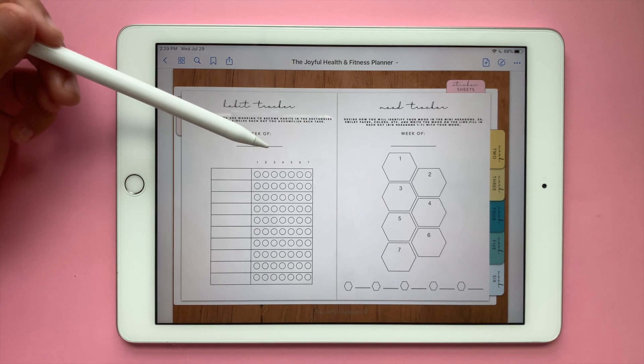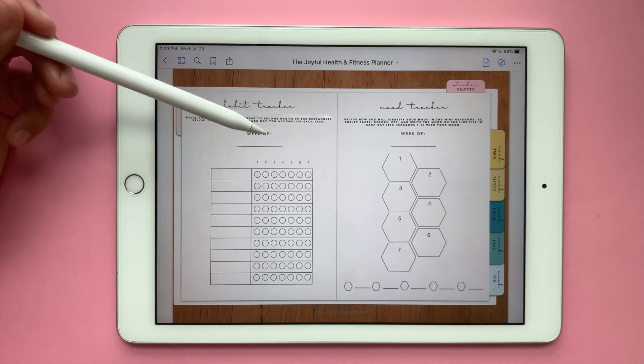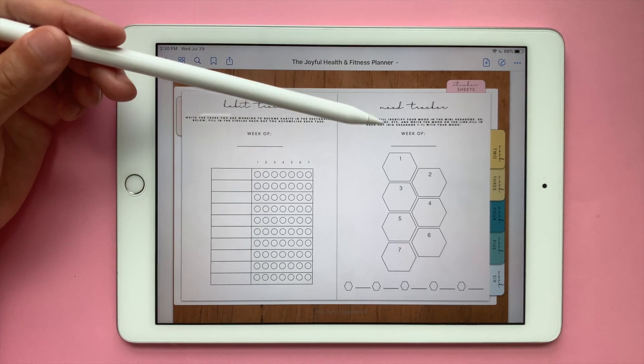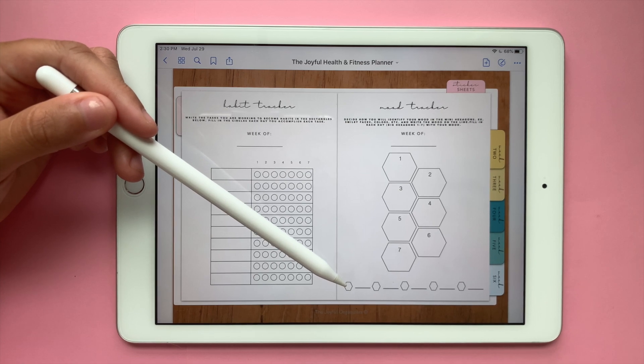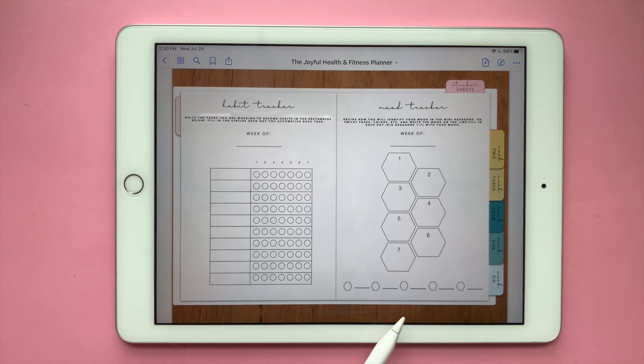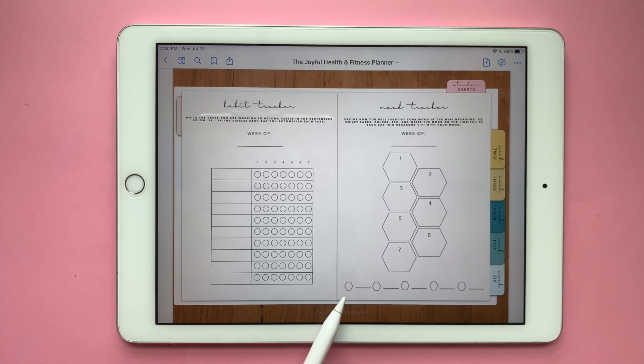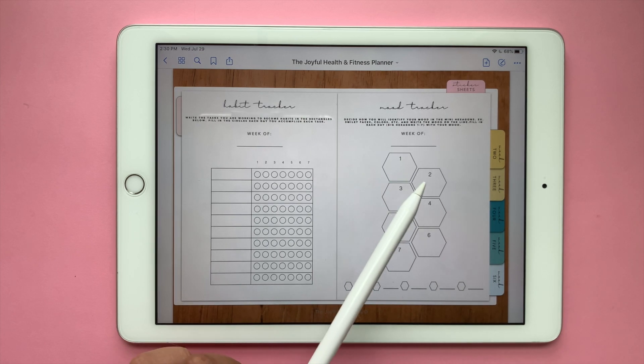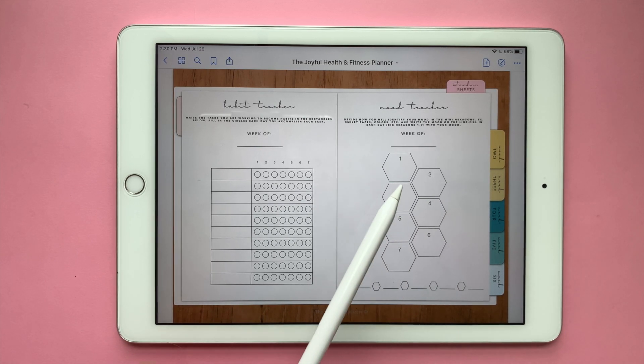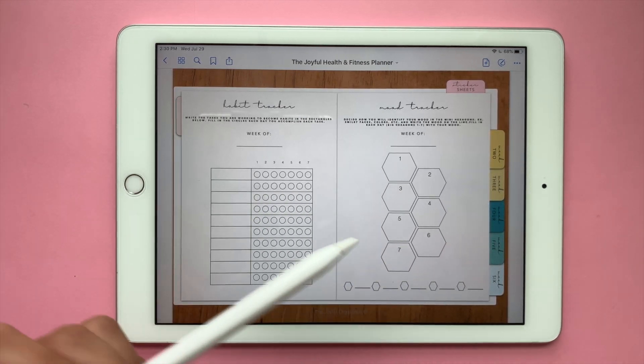You can write here also the date that you started to track these habits. For the mood tracker you will use this bottom part as your reference for how you're feeling. You can add little emojis, you can add colors, you can add numbers, it's up to you. It's also numbered here throughout the days of the week so you can keep track of that.